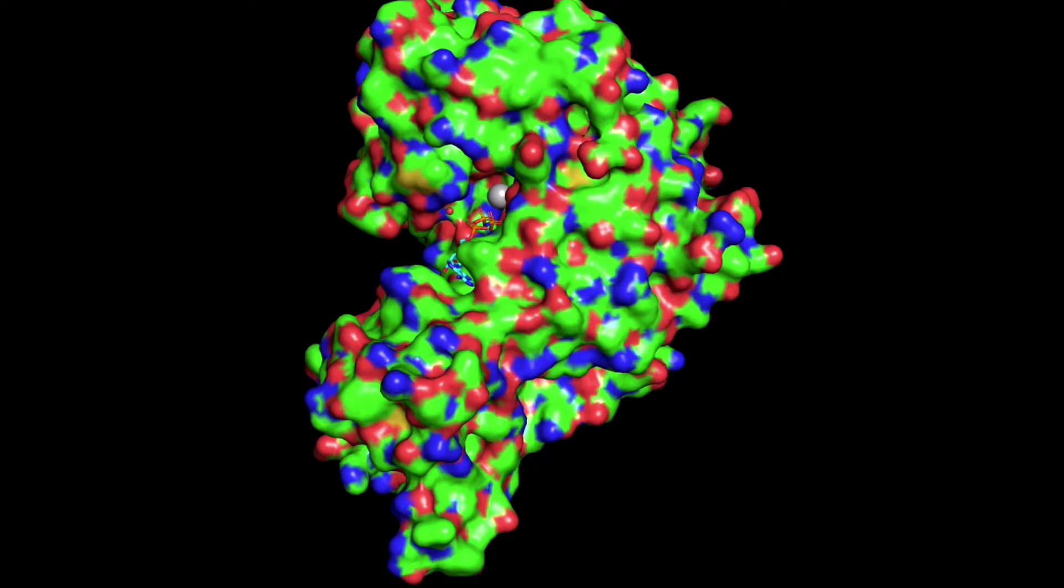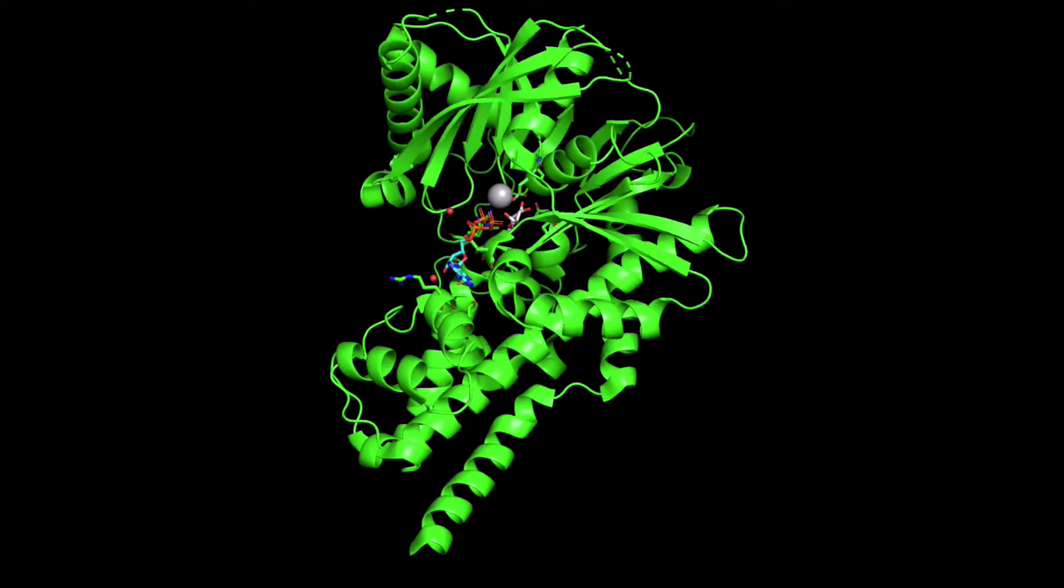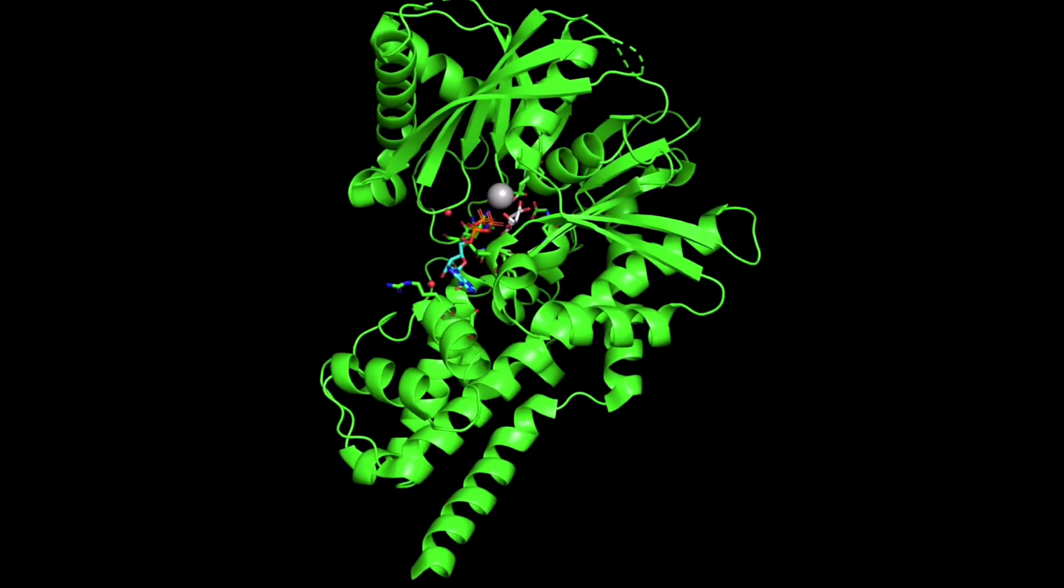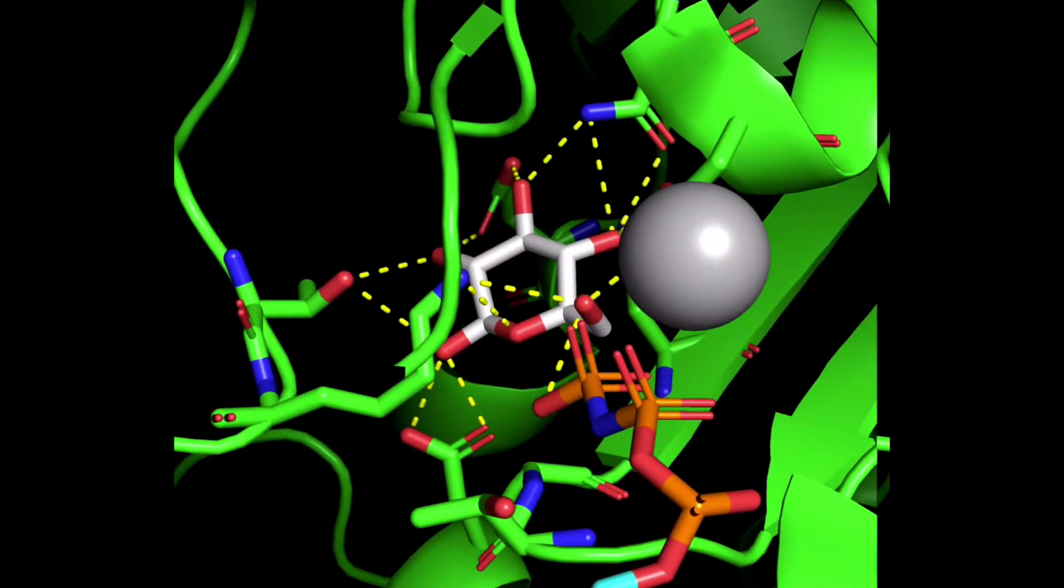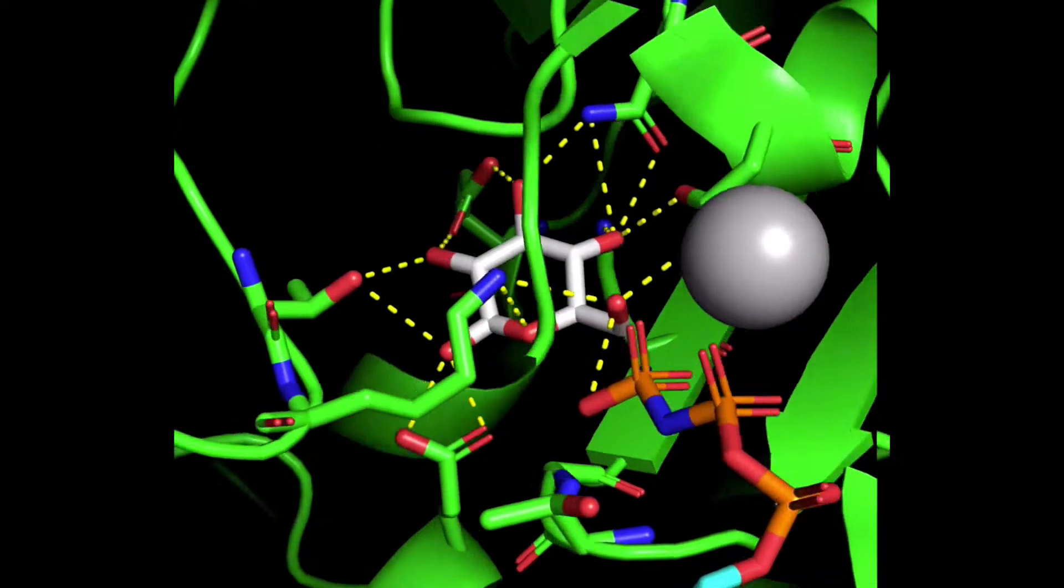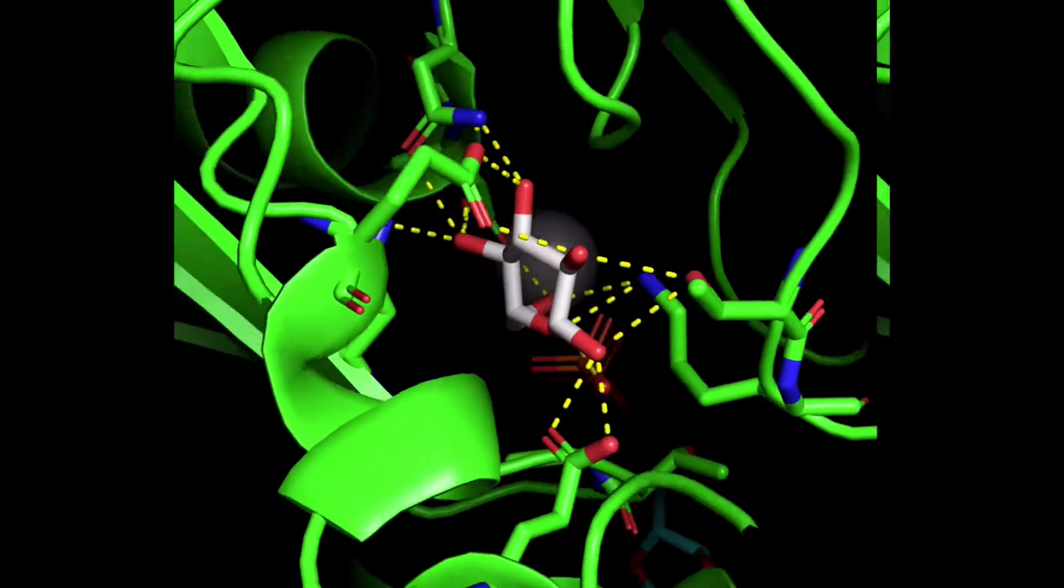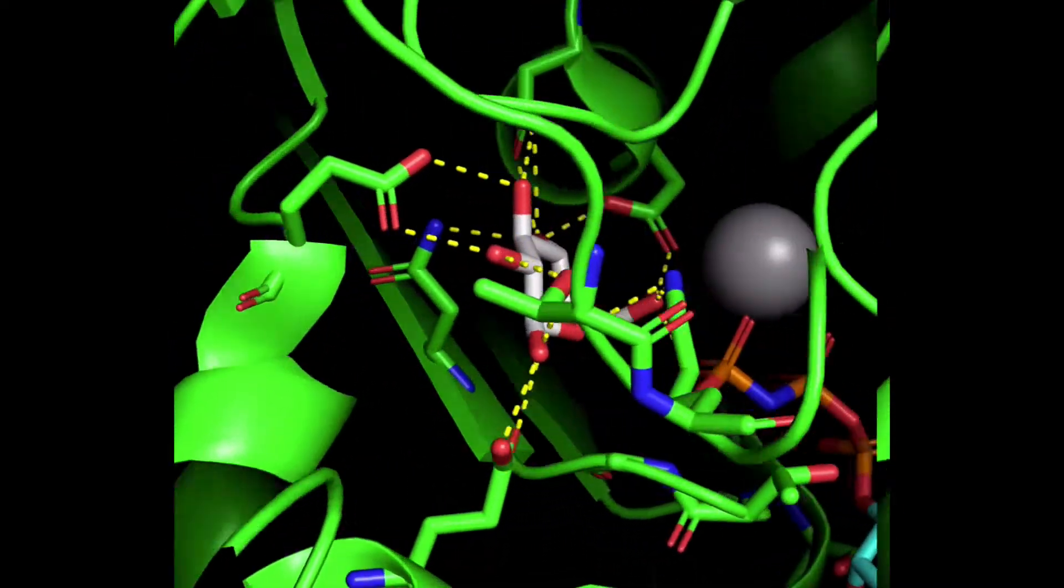Let's look at the active site of glucokinase now and see where the chemical reaction magic happens. In this crystal structure, there's a molecule of glucose bound. The OH groups on glucose are interacting with nearby amino acid residues in hydrogen bonds. I've shown the important active site residues as green sticks and the hydrogen bonds as yellow dashes.